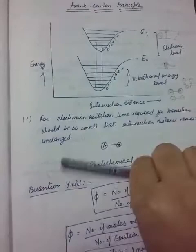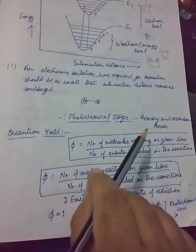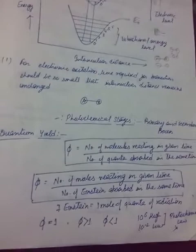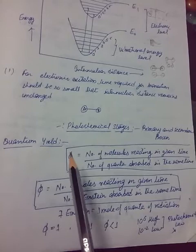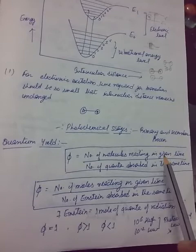Next, we talk about photochemical stages — primary and secondary processes. First, let's talk about quantum yield. Yield means how much product we have obtained. Quantum yield (phi, φ) is defined as the number of molecules reacting in a given time divided by the number of quanta of photons absorbed in that same time.